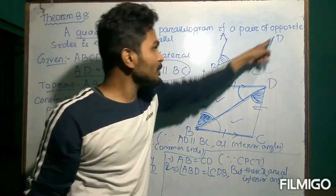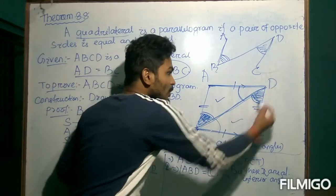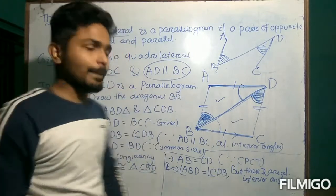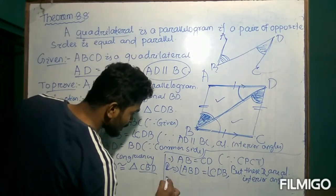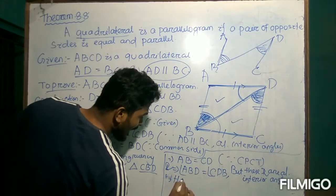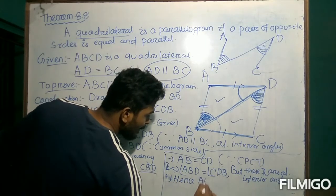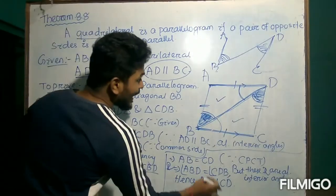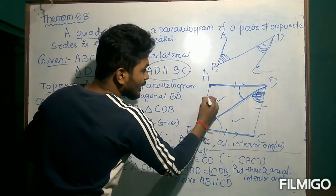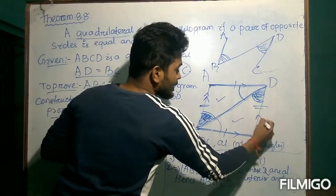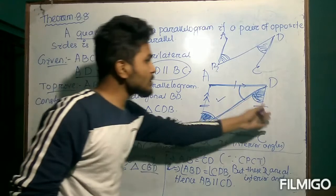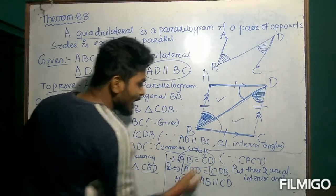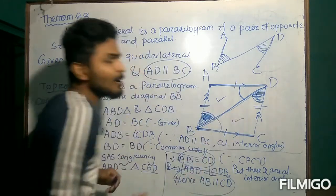So we can write AB is parallel to CD. We have proved that side AB is parallel to side CD, and these two are a pair of opposite sides. We have already proved that these opposite sides are equal, and now we have proved that these two opposite sides are also parallel.